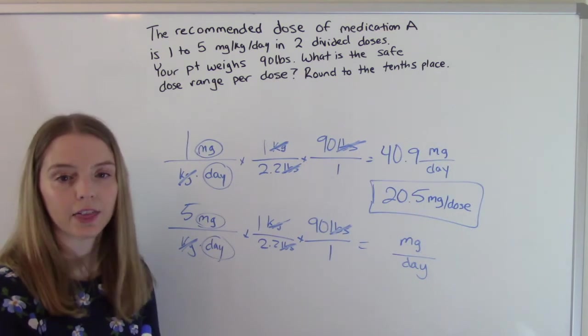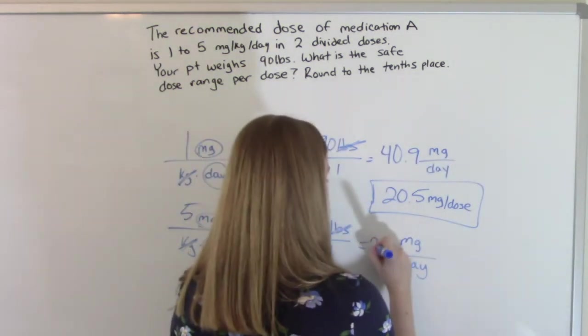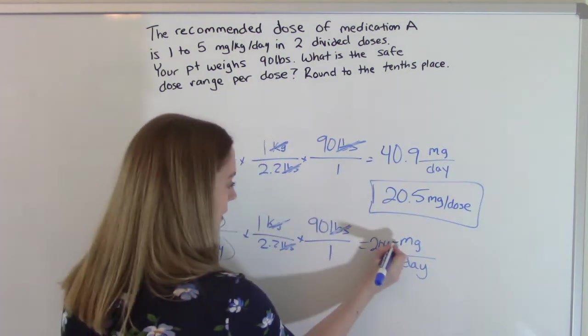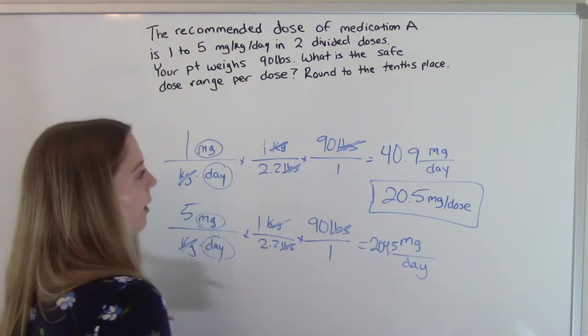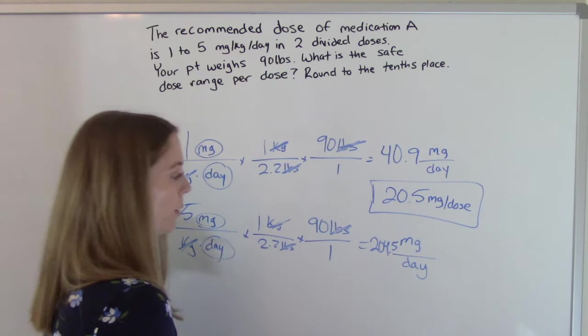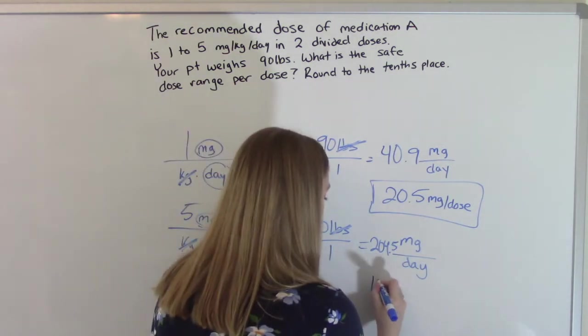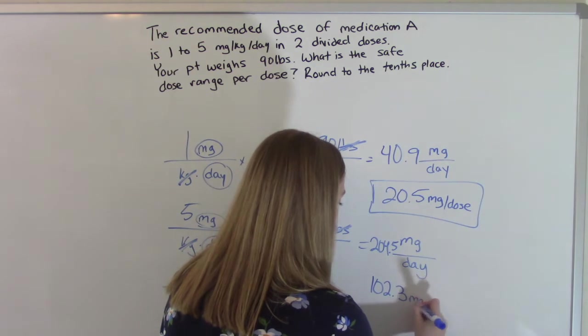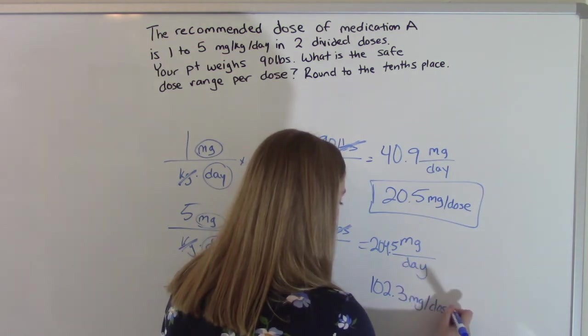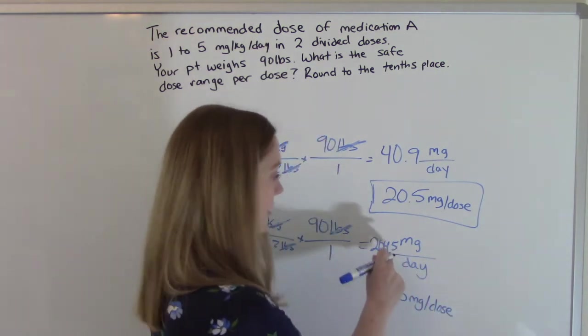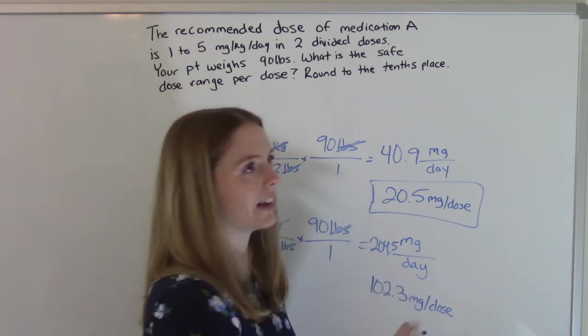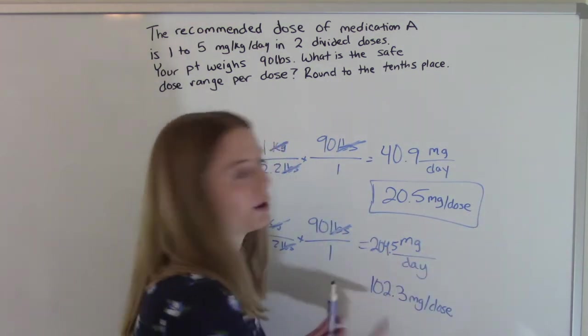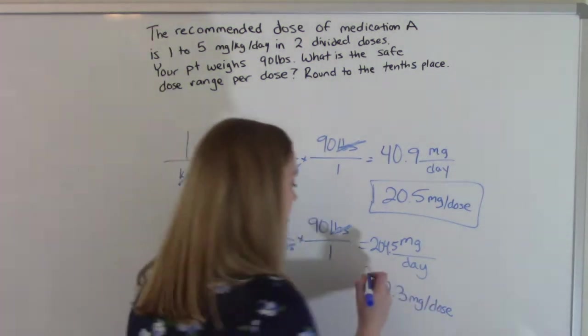And then you punch it in, you do the math, and you get 204.5. And then we need to divide that as well by two. So then we get 102.3. And then this number is not a nice 204.5, it's like repeating a lot. So when you divide that by two, you get 102.3. So this is our maximum.